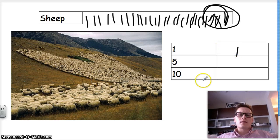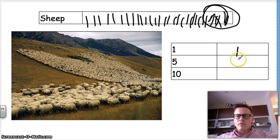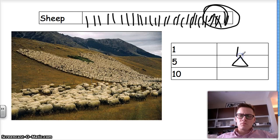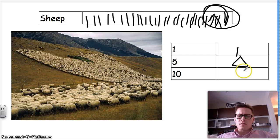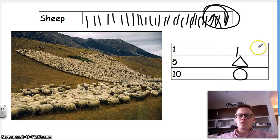So that's one — that's our symbol for one. Our symbol for five, let's make it a triangle. And our symbol for ten, let's make it a circle. So we've got one, five, and ten.